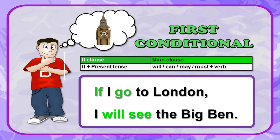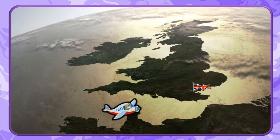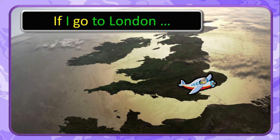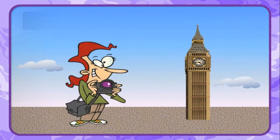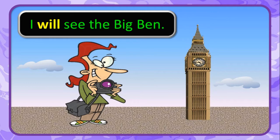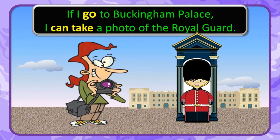Example of the first conditional: if I go to London, I will see Big Ben. Another example: if I go to Buckingham Palace, I can take a photo of the royal guard.